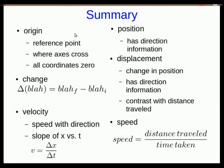Okay we've done quite a lot so it's time to summarize a few things we've seen that we work with coordinates which need an origin which is where the axes cross all the coordinates are zero. Any change is defined as a final value of the thing minus the initial value. Position is a location that we've assigned numbers to and it has direction information associated with it. A displacement is also directional it's a change in a position and it's quite different from a distance traveled. And a velocity you can think of as a speed with direction it's a slope of x versus t in other words a displacement over a time interval. Speed on the other hand is a distance traveled over time taken and we've seen that that is usually different.